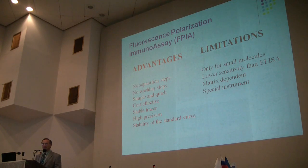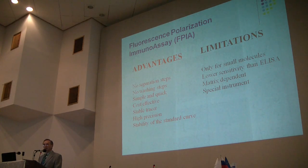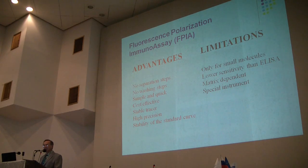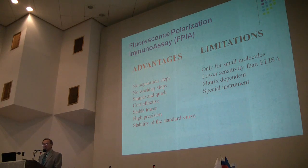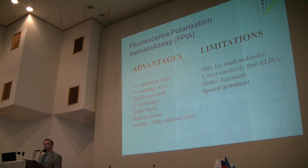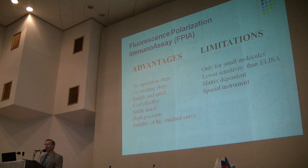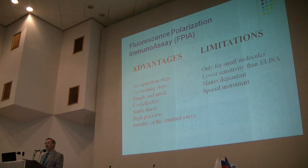The advantages of fluorescence polarization immunoassay compared to other analytical techniques include: no separation step, no wash steps, simple and quick procedure, quite cost-effective and cheap analysis, very stable reagents, and very high precision. One unique advantage is a very stable standard curve — once optimized, you can use this standard curve for quantitative detection. If you work with ELISA, each new plate requires a new standard curve, but for fluorescence polarization immunoassay, one prepared standard curve can be stored in computer memory and reused for quantitative calculation, provided you keep constant temperature and viscosity.